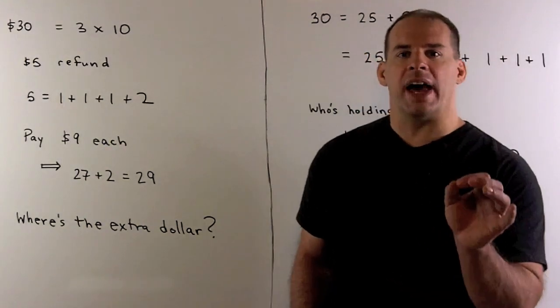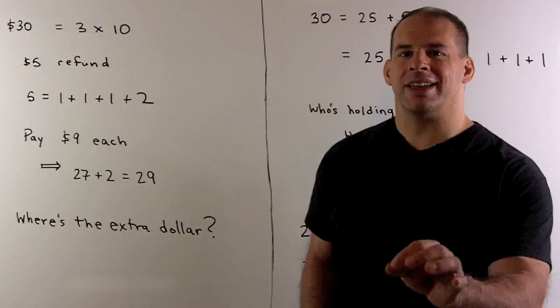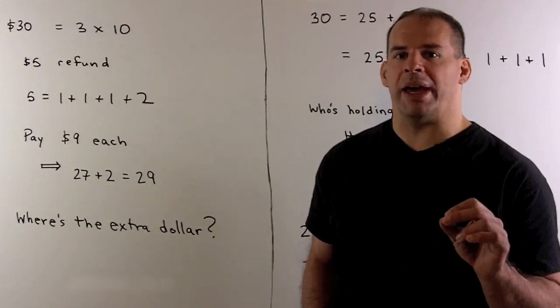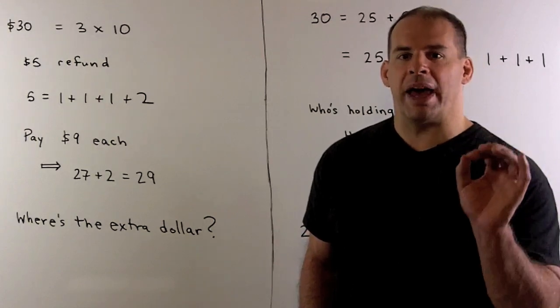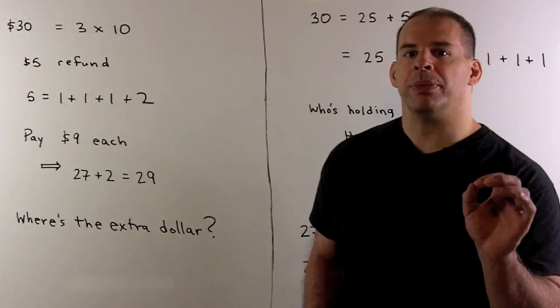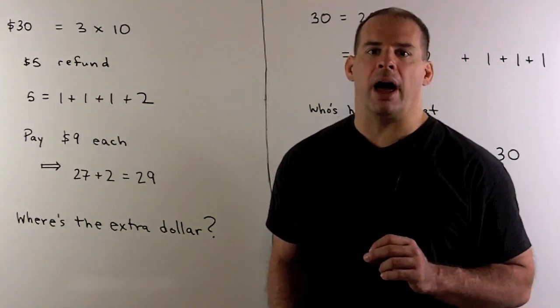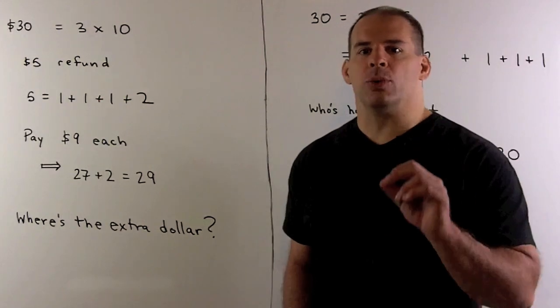Now, each guest pays $10, gets $1 back. So each guest actually only pays $9. So times three, the guests pay out $27 plus the $2 for the bellhop. That equals $29.